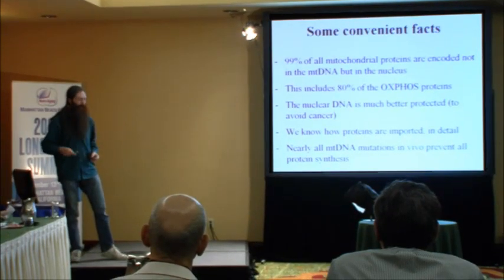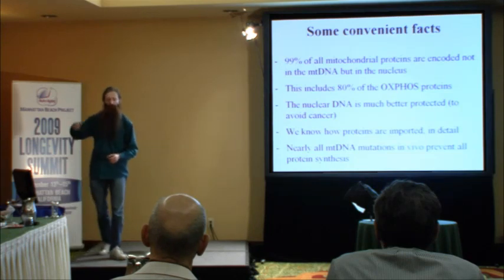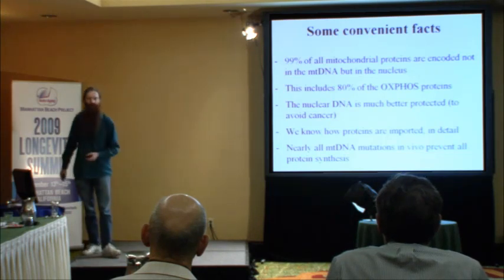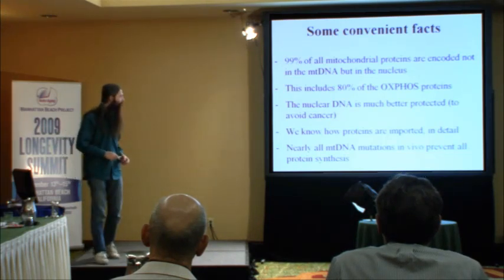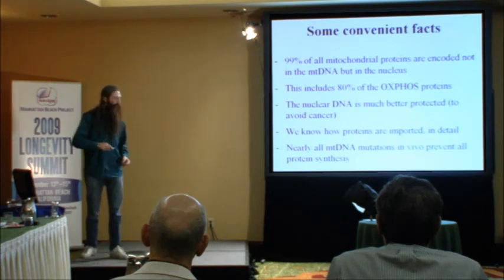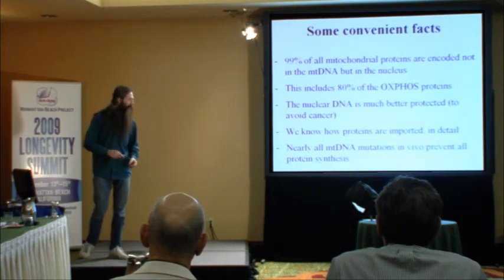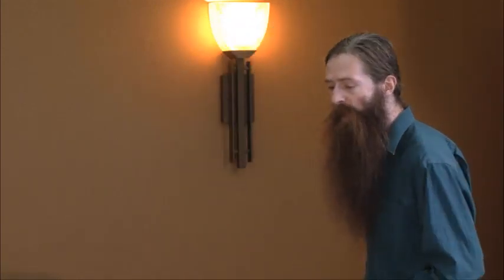It turns out that mutations accumulate much, much faster in the mitochondrial DNA than they do in the nuclear DNA. So it's really a rather bad thing that these 13 important proteins are encoded in the mitochondrial DNA. Furthermore, the type of mutations that accumulate in mitochondrial DNA during normal aging tend to completely eliminate all 13 of these proteins from being made.